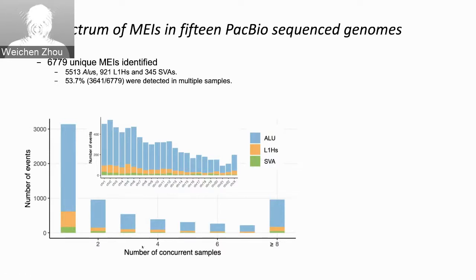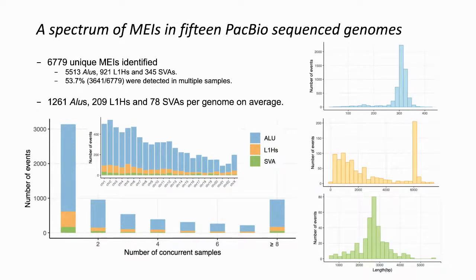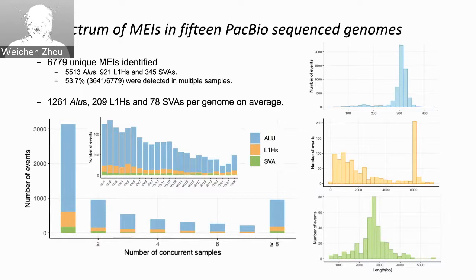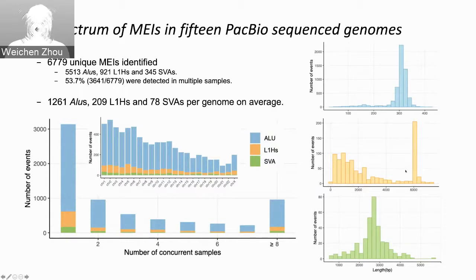More than 50 percent of insertions were detected in multiple samples. On average, we have more than 1,200 ALUs, 200 L1HS, and about 80 SVAs per genome. The right panel shows the length distribution for all ALUs, L1HS — including full-length L1HS near the 6 kilobase pair mark — and SVA.